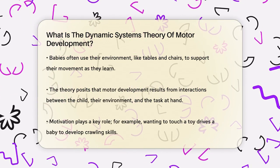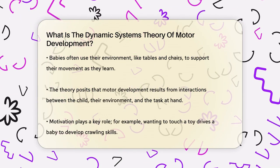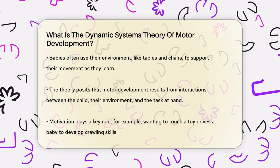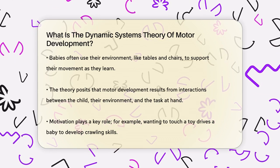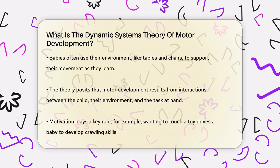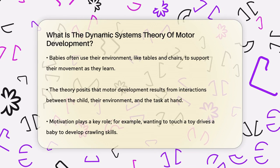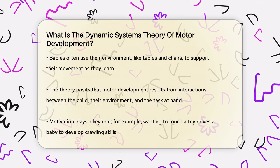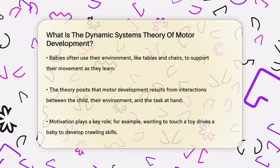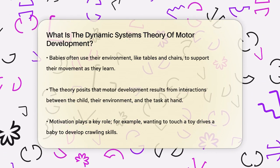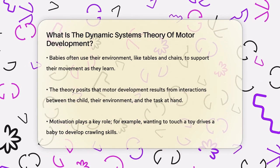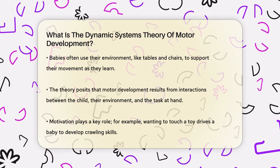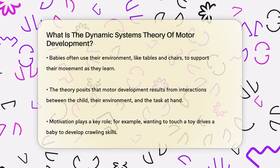According to this theory, motor development is the result of interactions between the child, the environment, and the task they are trying to accomplish. For instance, if a baby wants to touch a toy that's just out of reach, their motivation to get to it drives them to develop the necessary skills to crawl towards it.